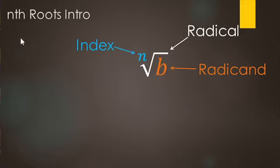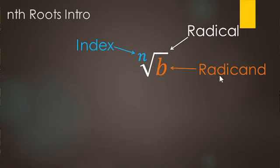In this video, we're going to be looking at nth roots. Here's our form of nth roots: the nth root of B. The symbol is called a radical — we used to call it a square root symbol. The number underneath the radical is called the radicand. The new part for this video is the little number called the index of the radical.